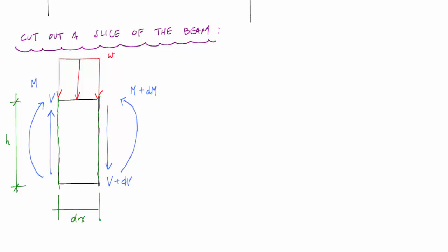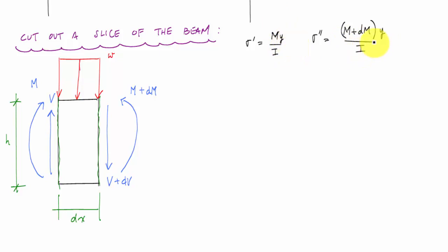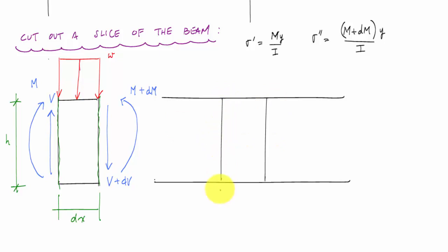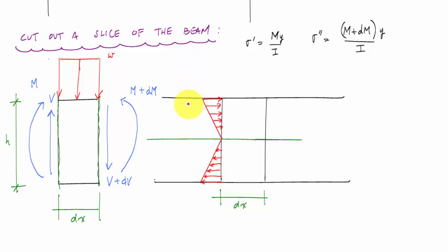I can convert each of these moments to a normal stress using the flexure formula. I'll call σ′ = My/I on the left face, and σ″ = (M + dM)y/I on the right face. The y's and I are the same because it's the same cross-section geometry. So my normal stress profiles for each face look like this, with the neutral axis through the geometric centroid — compression at the top, tension at the bottom, with plus y defined upward from the neutral axis.